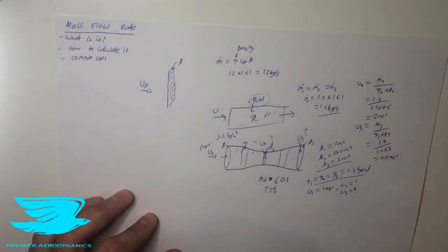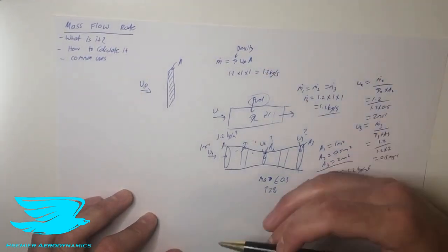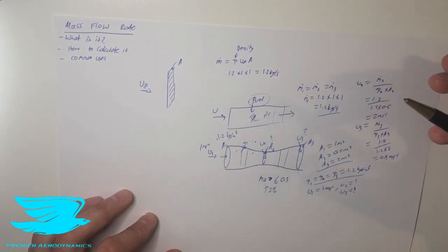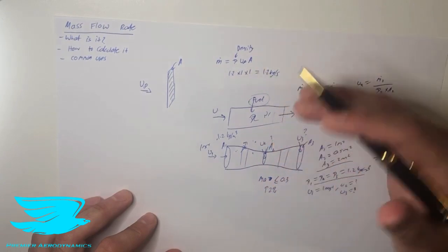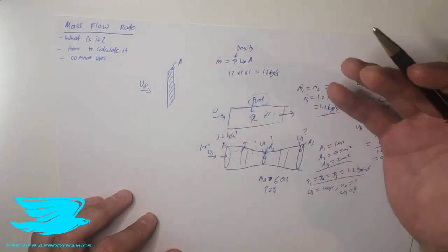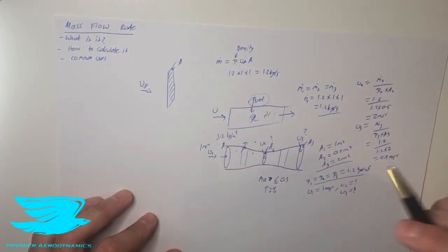So that's how powerful the mass flow rate is. It's a very simple equation, yet it's so applicable to so many situations and it gives us a lot of information very quickly. And these are based on very fundamental properties, which we often know at least a few of them, so it's quite easy to figure out.